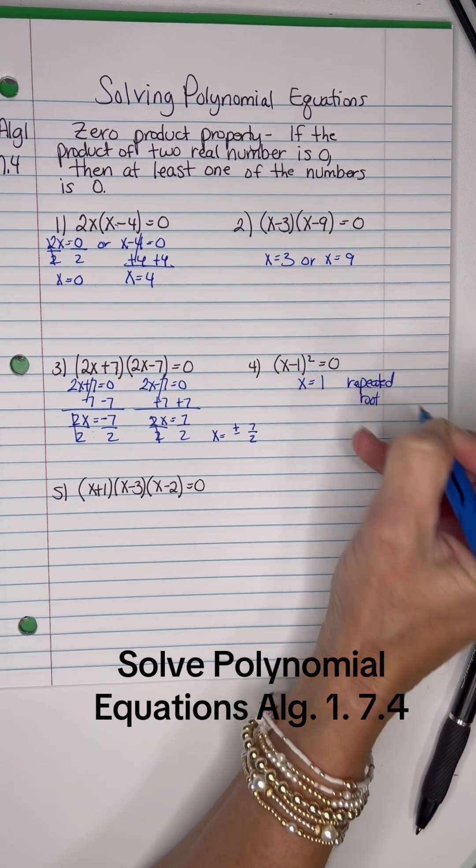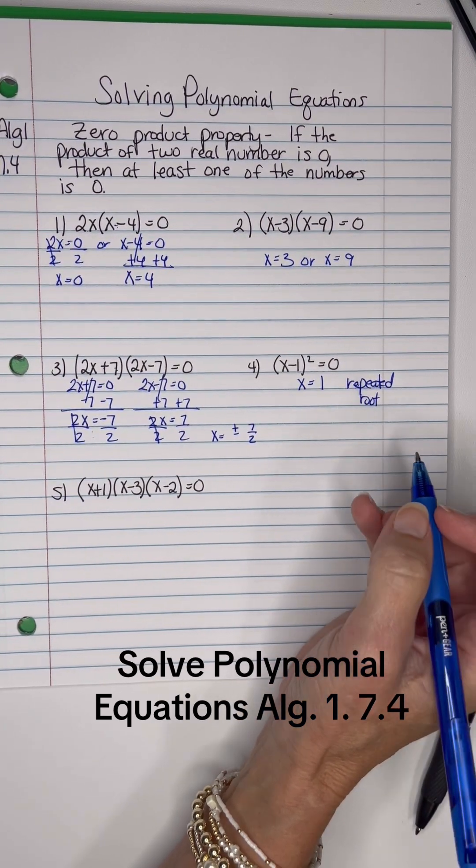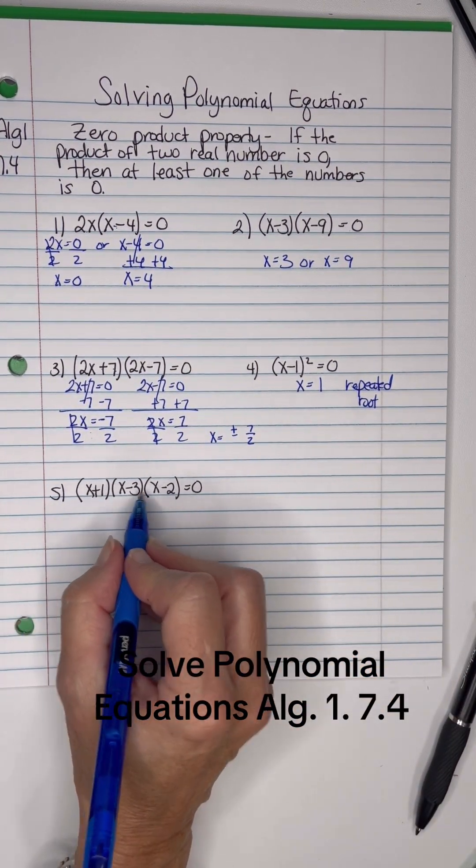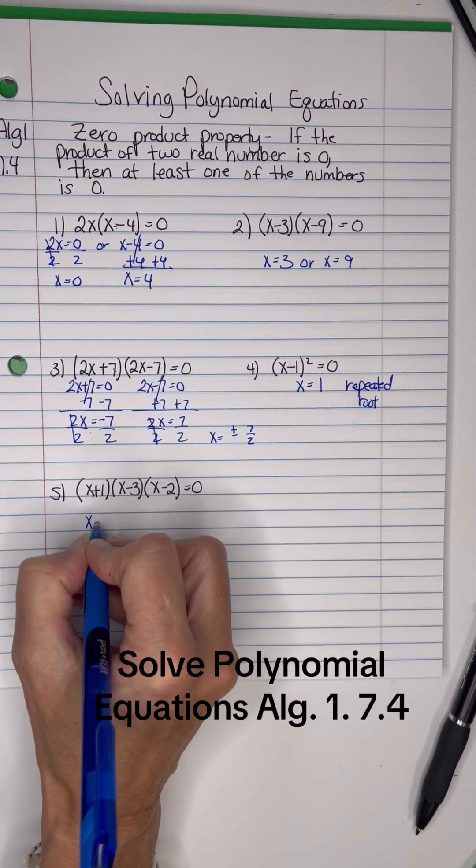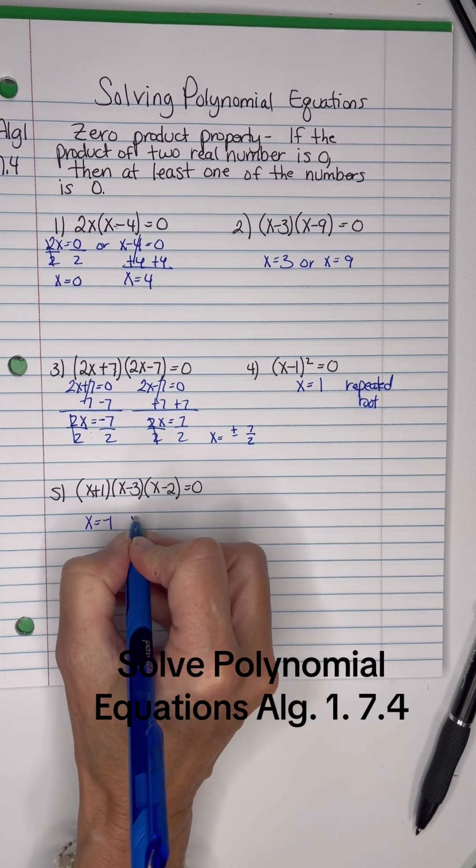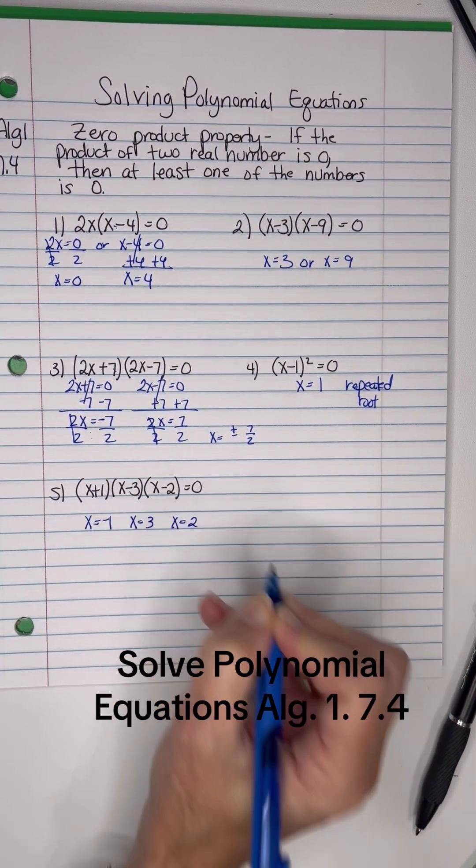And then on this one, one of these three equals zero. So X could be negative 1, or X could be 3, or X could be 2.